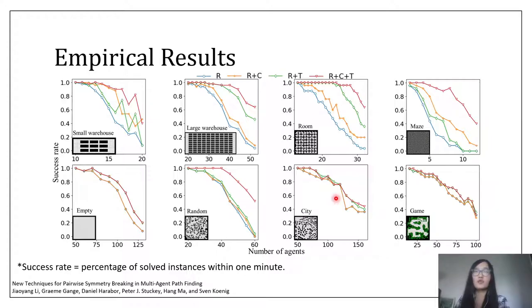Here we show some empirical results. The x-axis again is the number of agents, and the y-axis is the success rate. R is rectangle symmetry, which is our baseline algorithm. C and T are corridor and target symmetry. You can see that in different domains, the improvement of corridor symmetry and target symmetry is different. But overall, they both improve the performance, and the combination of them always performs the best.